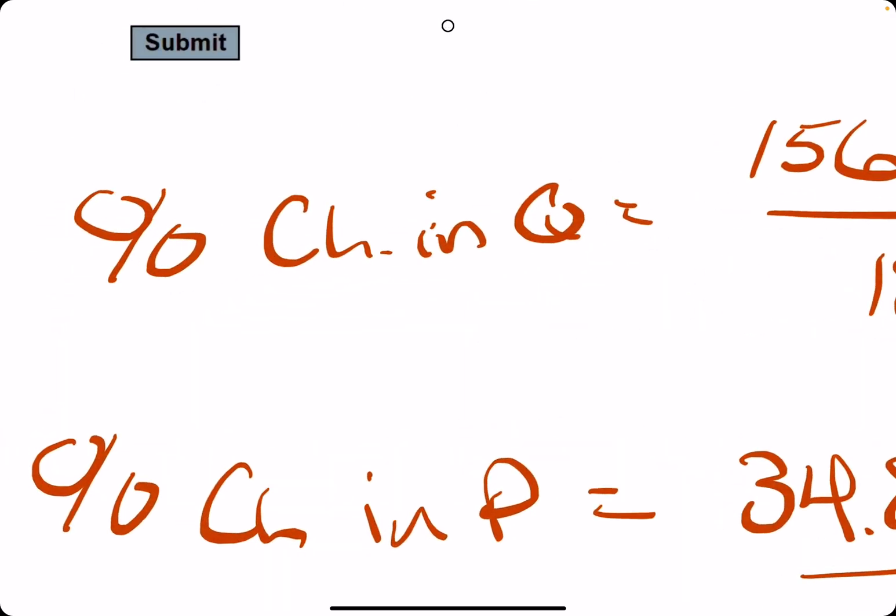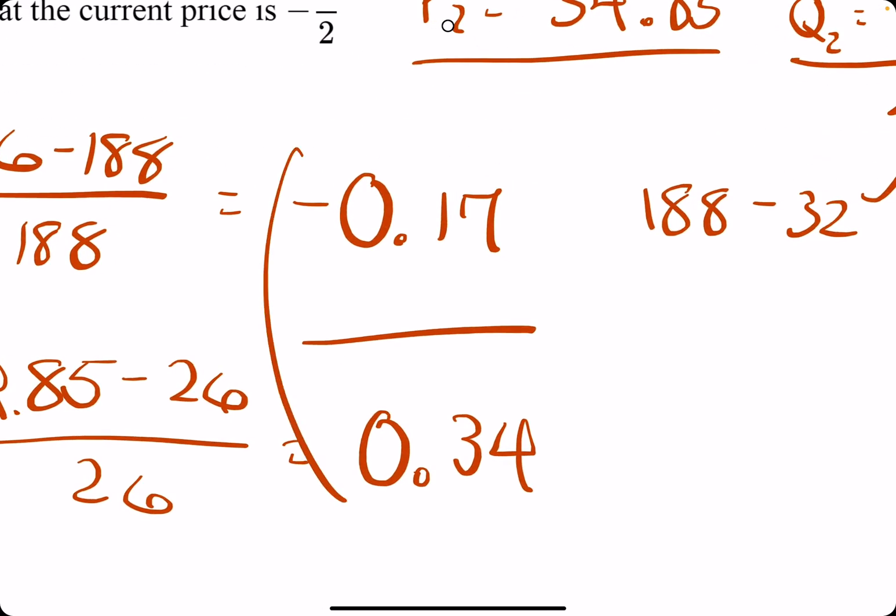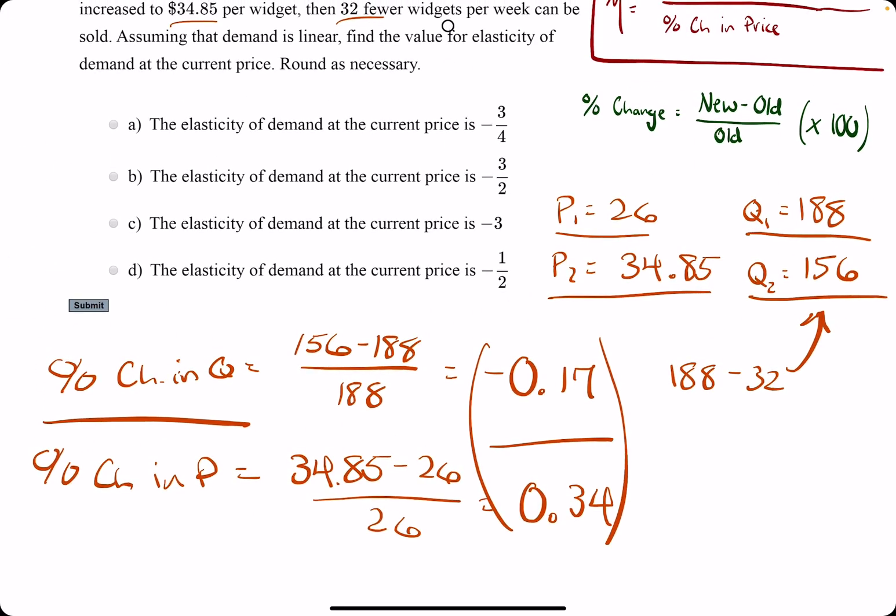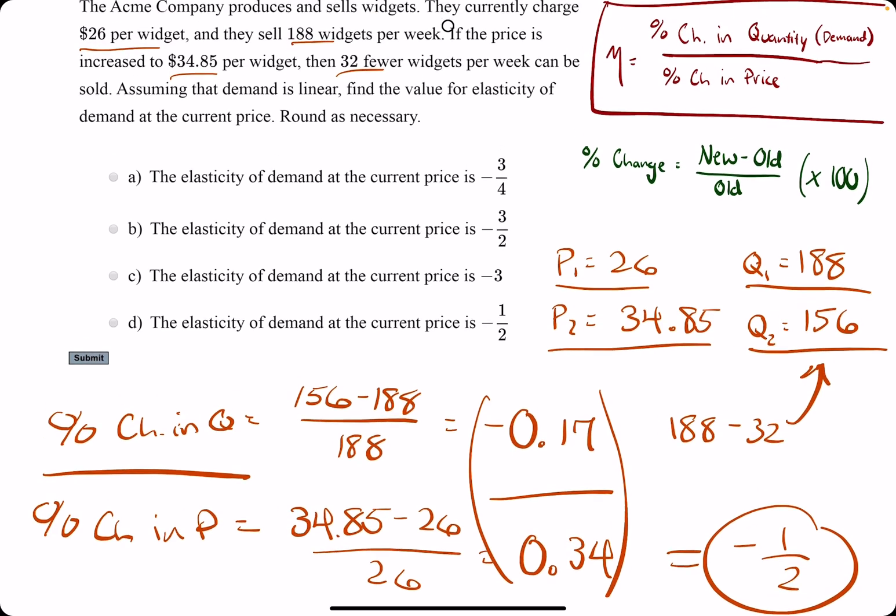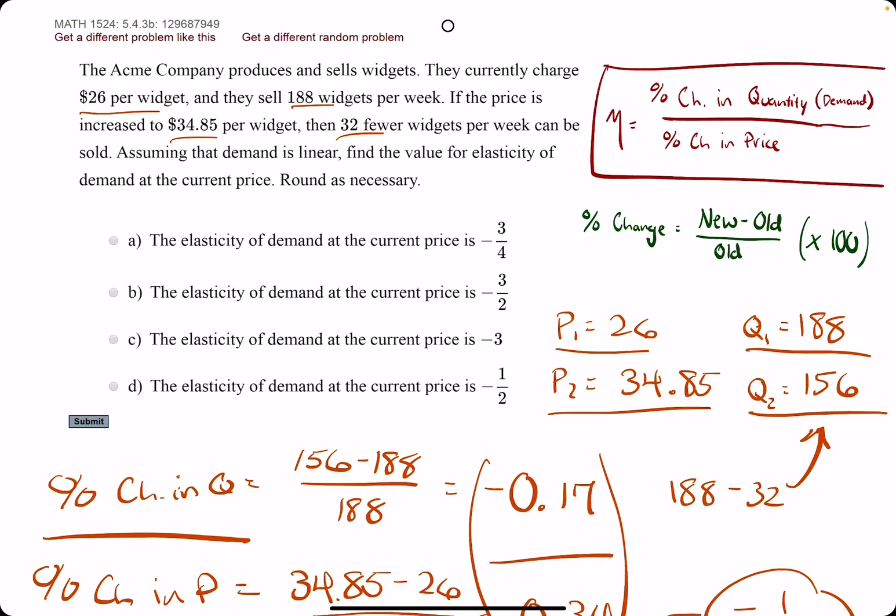Alright. So now we're doing percent change in quantity divided by percent change in price. So really just these two divided by one another. Looks like it should give us about one half. So 17 is one half of 34. So we get negative one over two. And so we're looking for the elasticity to equal negative one over two.